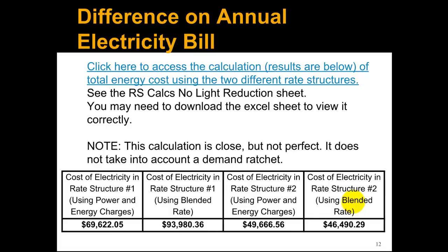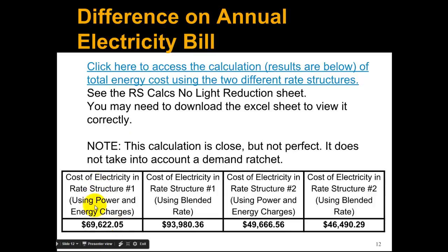If we just look at the cost of electricity — I had the 15-minute consumption data of the school — I used that to calculate the cost of electricity in rate structure number one. If I do it using the energy and power charges, which is the correct way, I get $69,000. If I use the blended rate, I get $93,000. That's a huge difference, and that's why we really want to use the power and energy charges and not the blended rate.